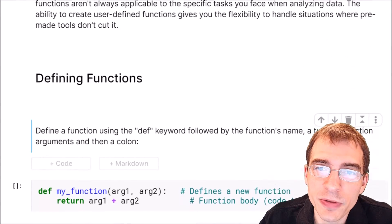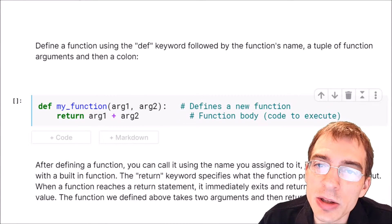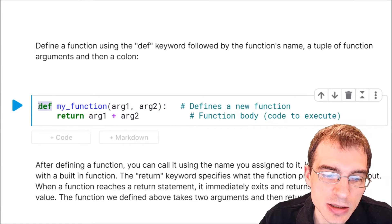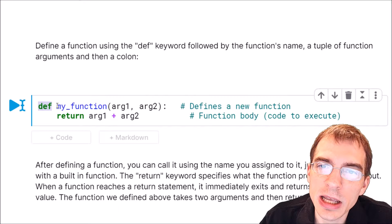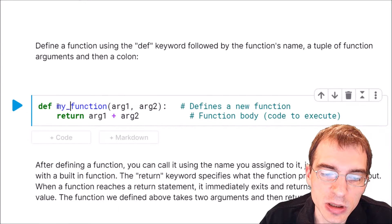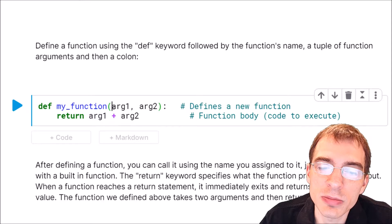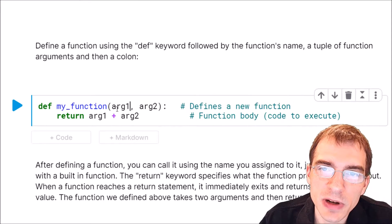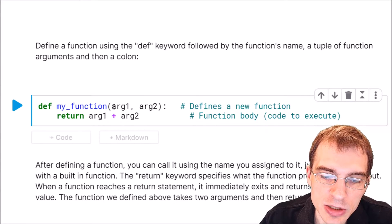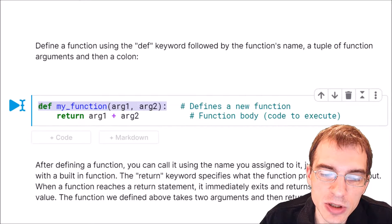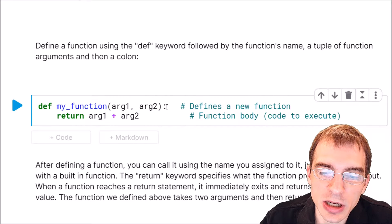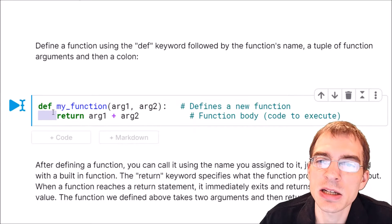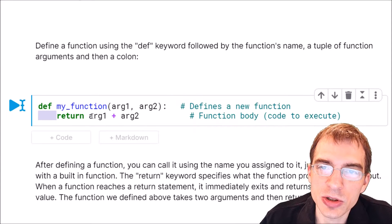So start by learning how to define new functions in Python. To do that you start with the def keyword, which is saying 'define a new function'. Then you write the name of the function after that. We're going to call this one my_function. After the function name you have parentheses, and within the parentheses you specify all the different arguments the function has to take and operate on. Then the colon ends the definition line, and everything that comes after the colon on the next indented line is the code body that is going to run within the function.